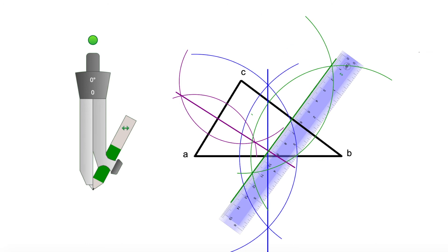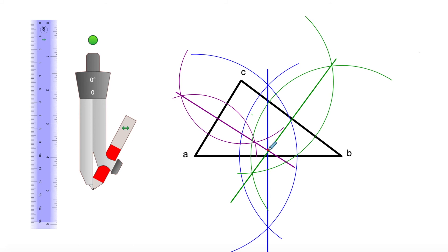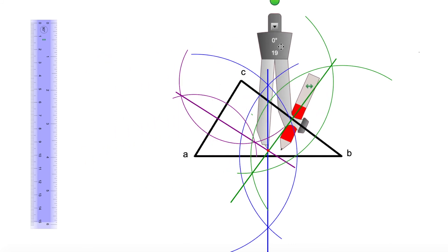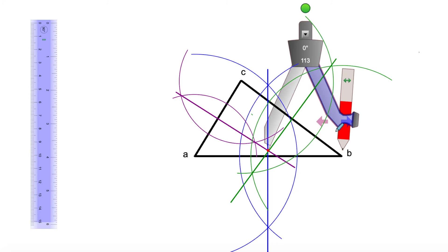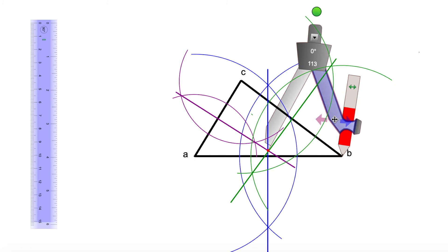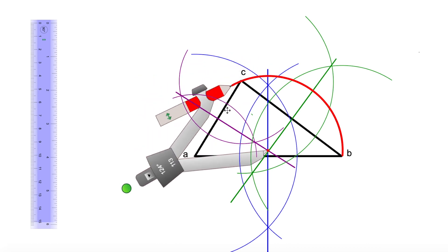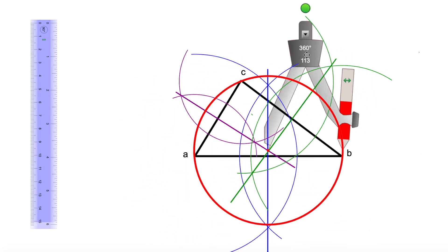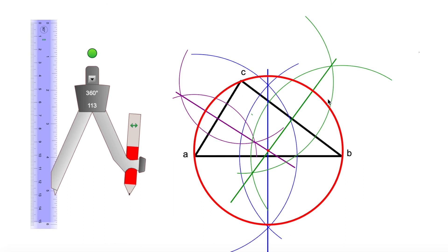If we did everything right, those three bisectors should meet in one point — see that point where the three bisectors meet? That is the circumcenter of our triangle. Now we draw the circumcircle: I place the compass needle in the circumcenter and open it to any of the vertices — in my case vertex B, but you can use C or A, because the pencil of the compass will pass through all three vertices. And that is how you find the circumcenter of a triangle and trace the circumcircle. I hope you learned something new in this video — see you very soon!